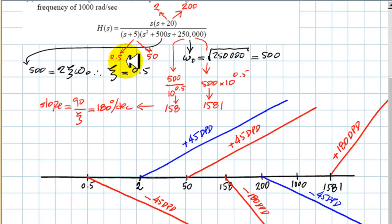I mark now each one of the knee points, 0.5, 5, 2, 200, 158, and 1581, on a scale, with the contributions of course. This one, minus 45 degrees per decade, and plus 45 degrees per decade, etc. At 158 and 1581, for this pair of complex conjugate poles, the slope is 180 degrees per decade, downwards at 158, because those are poles, and upwards at 1581 radians per second, with the same slope.